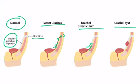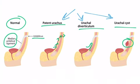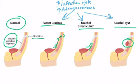All three of these pathologies come with an increased risk of infection and an increased risk of adenocarcinoma of the bladder — specifically a cancer of the dome of the bladder, which makes sense because it's at the dome where the urachus attaches.